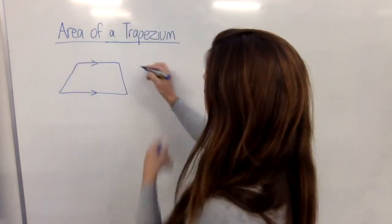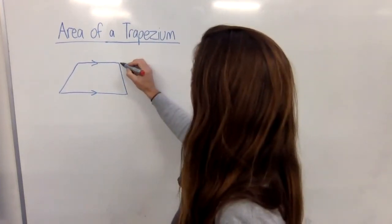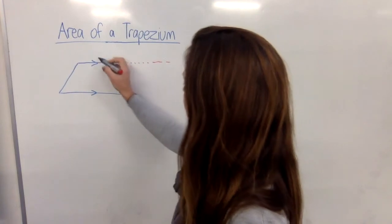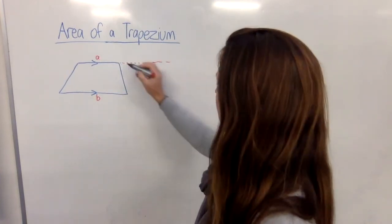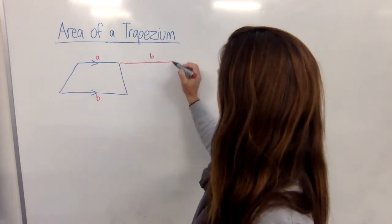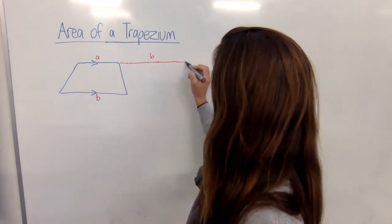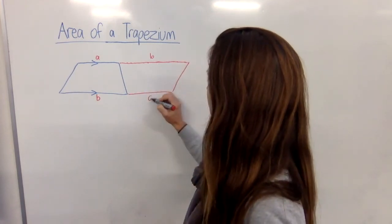Imagine bringing it around and I could, let's do it with another color, and I could bring it around like this so that if we label the short side A and the long side B, then I could bring it around so that this other B, the long side, sat up here, and then the short side would be down here.